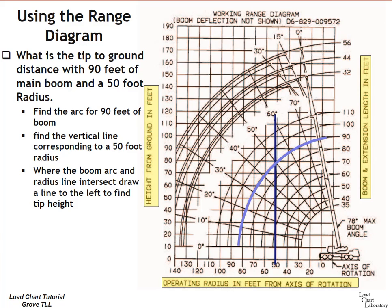At that point where they intersect, draw an imaginary straight line over to the left. On the illustration here, I'm actually putting in a green line to illustrate that imaginary straight line over to the left. And wherever that straight line ends up, that is your tip to ground distance or your tip height. 80 feet. The tip to ground distance with 90 feet of main boom and a 50-foot radius is 80 feet, and 80 feet is the distance you'll use for your wire rope calculations.